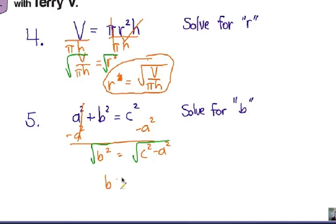And now, b is the square root of c squared minus a squared. Solving the original formula or equation for b.